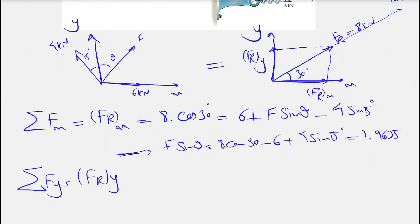We have the same thing for y. Sum of Fy equals FR y, which we know this time FR y will be 8 sine of 30. And if we look at the left diagram, we'll see what we have for y component. So the 6 kN force is on the x axis, so there wouldn't be any y for that.